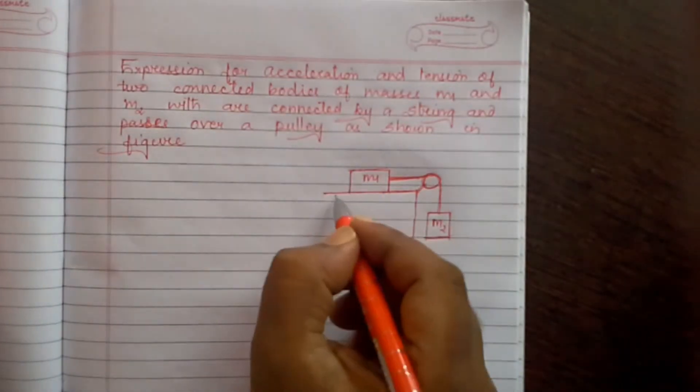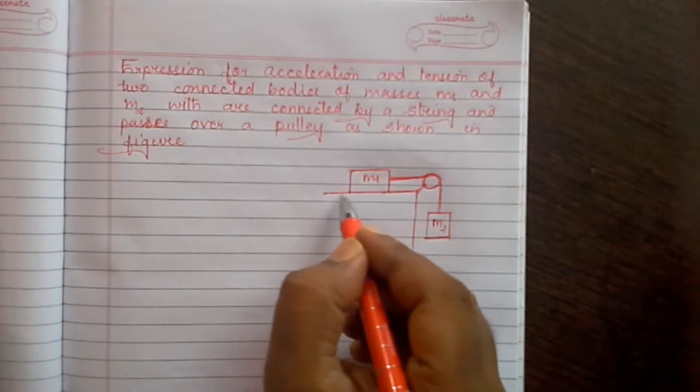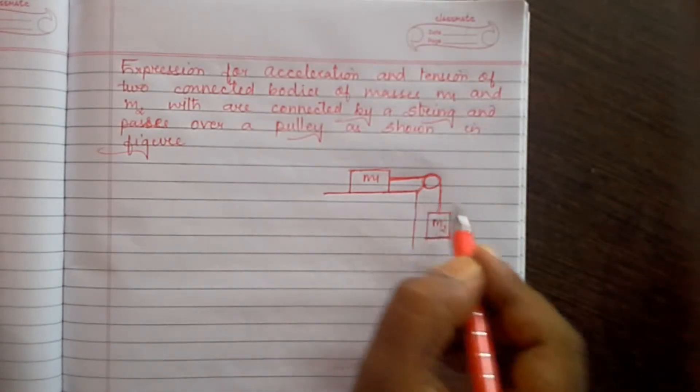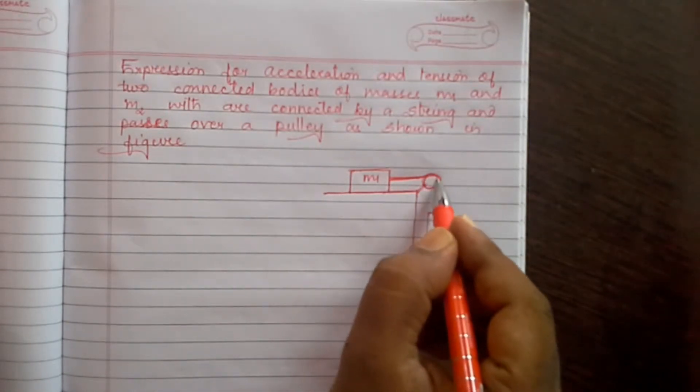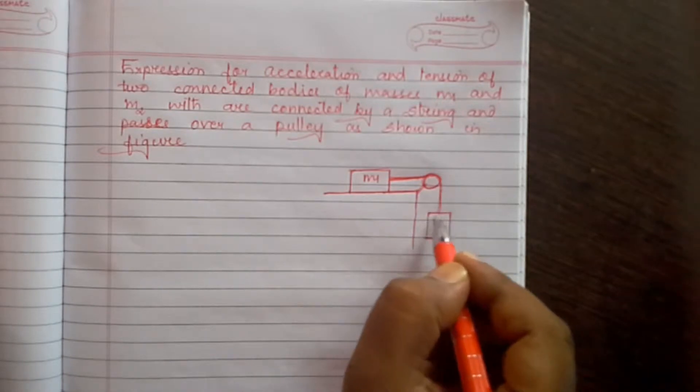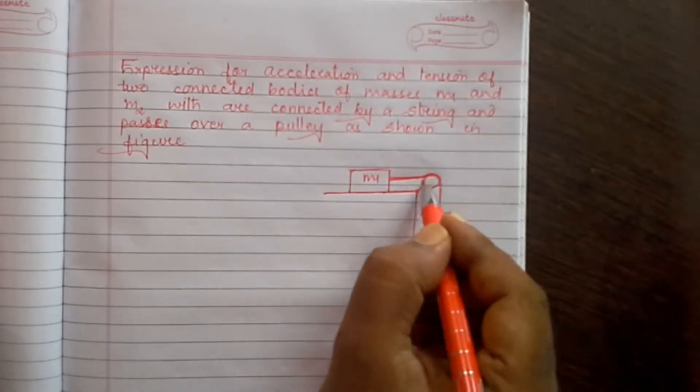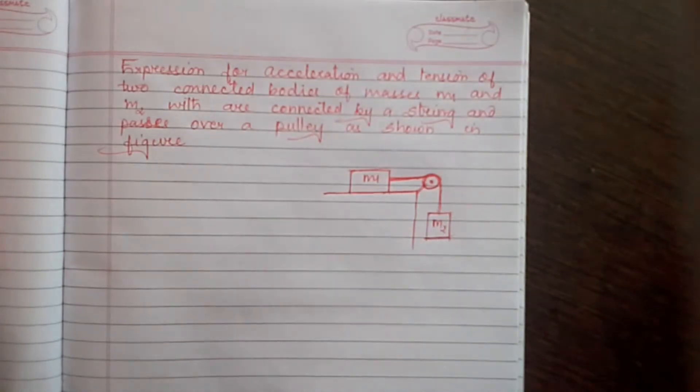Here we have the figure where mass M1 is lying on a horizontal platform and it is connected with a string with mass M2, and the string passes over the pulley. For this, let's assume...